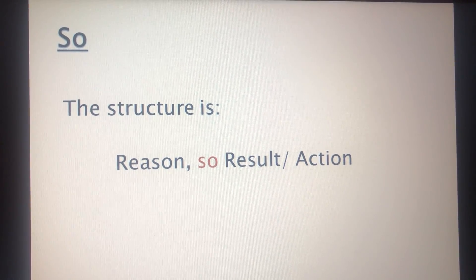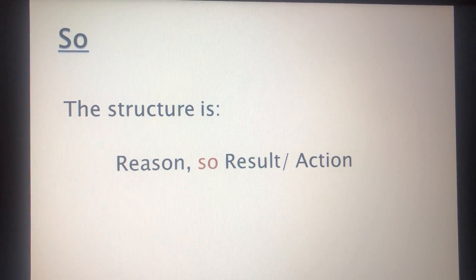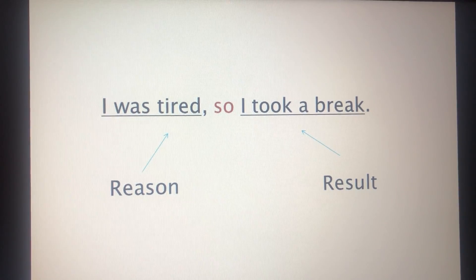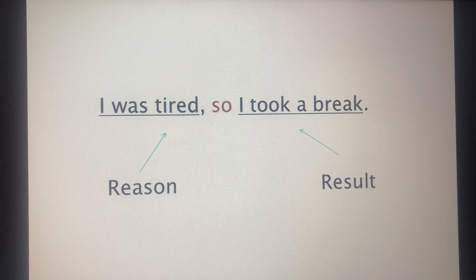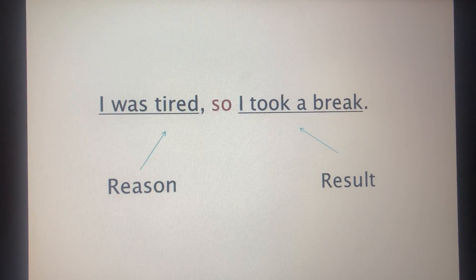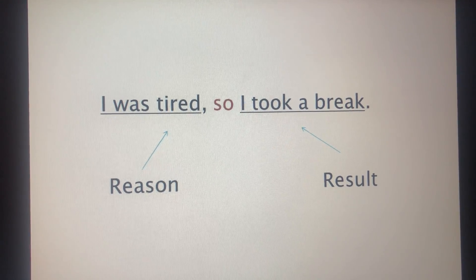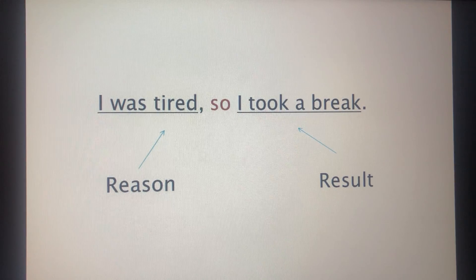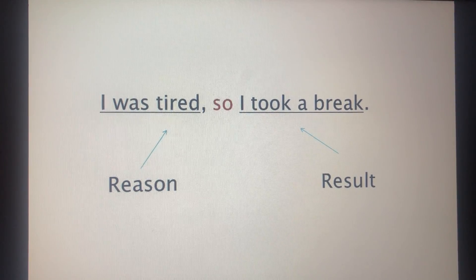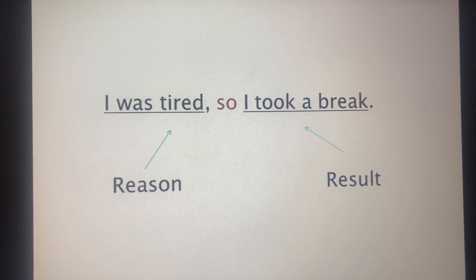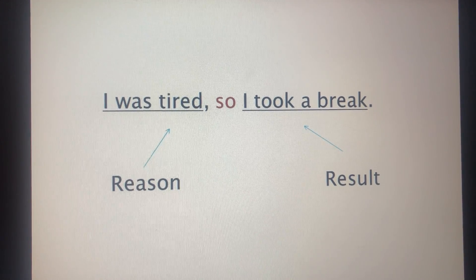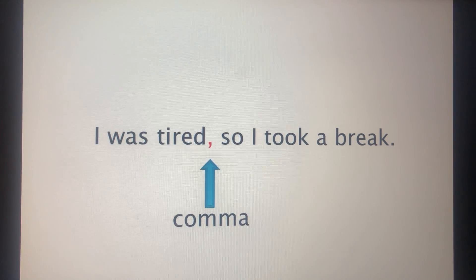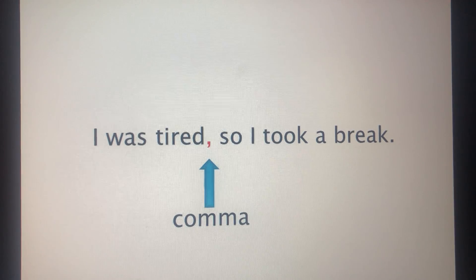First, let's talk about 'so.' The structure is: reason, comma, so with result or action. Look at this example: 'I was tired, so I took a break.' 'I was tired' happened first — it is the reason for taking a break. Reasons come before 'so.' So comes with the result. Please notice that we write a comma before 'so.'